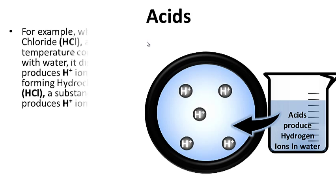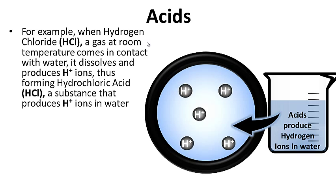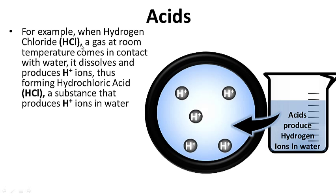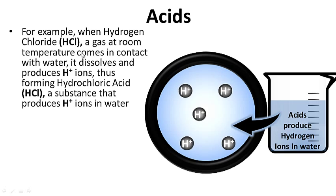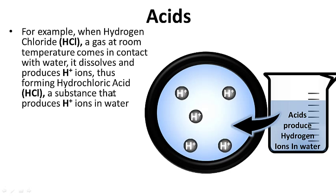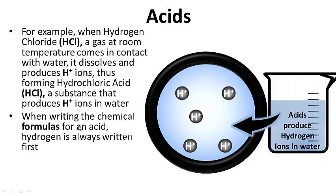One of the acids we're going to be working with a lot this year is HCl, hydrochloric acid. How do we make that acid? When hydrogen chloride — it's a gas — comes in contact with water, it dissolves and produces hydrogen ions, thus forming hydrochloric acid. So a substance that produces hydrogen ions in water — that's our definition.